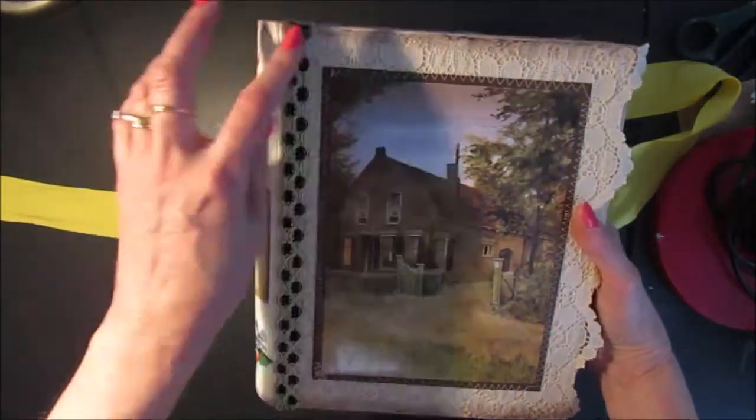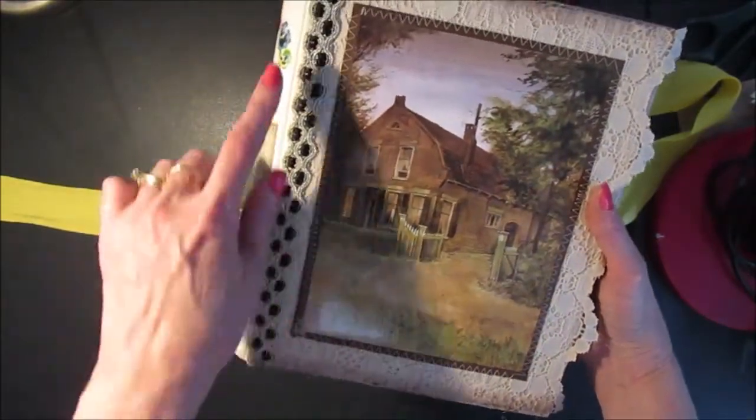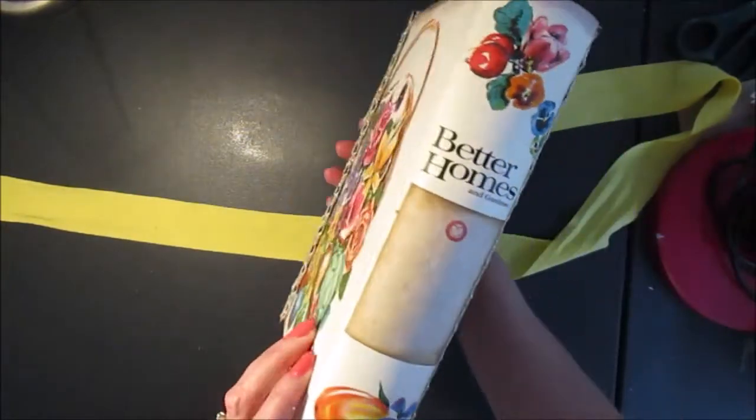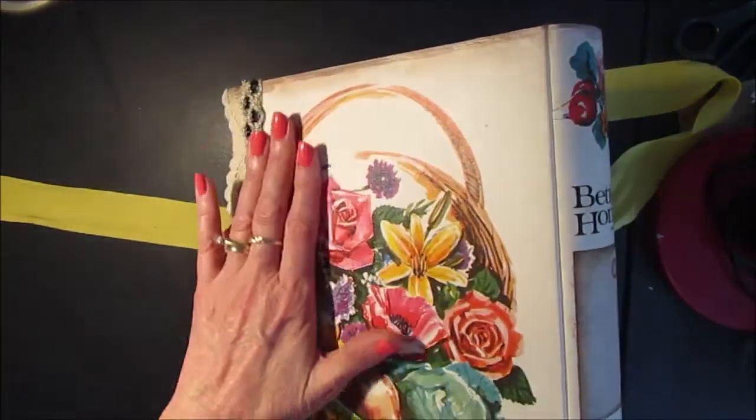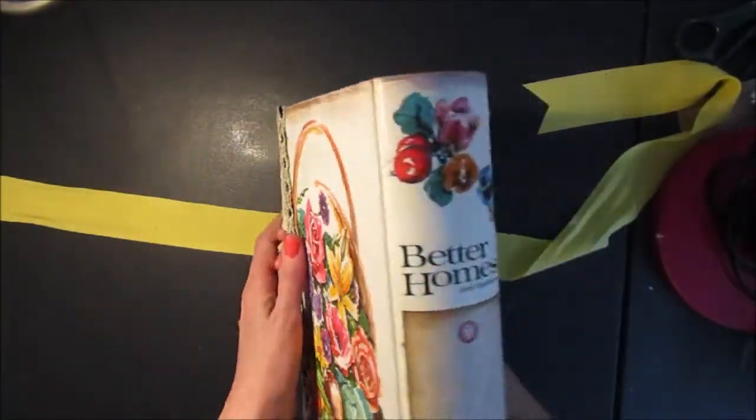Now I attached some lace to the top cover and I have some trim along the edge. I love the image of this binder. I inked around the edges to make it look old although it already is old.